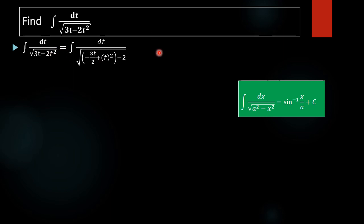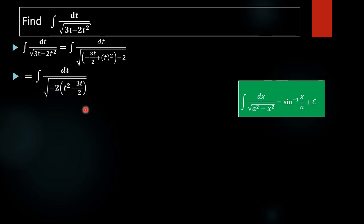What we are going to do is take negative 2 outside the bracket. This leaves t squared minus 3t by 2 inside. The 2 in the denominator comes from the fact that 1 equals 2 by 2, so taking 2 outside leaves another 2 remaining, giving us minus 2 into t squared minus 3t by 2.